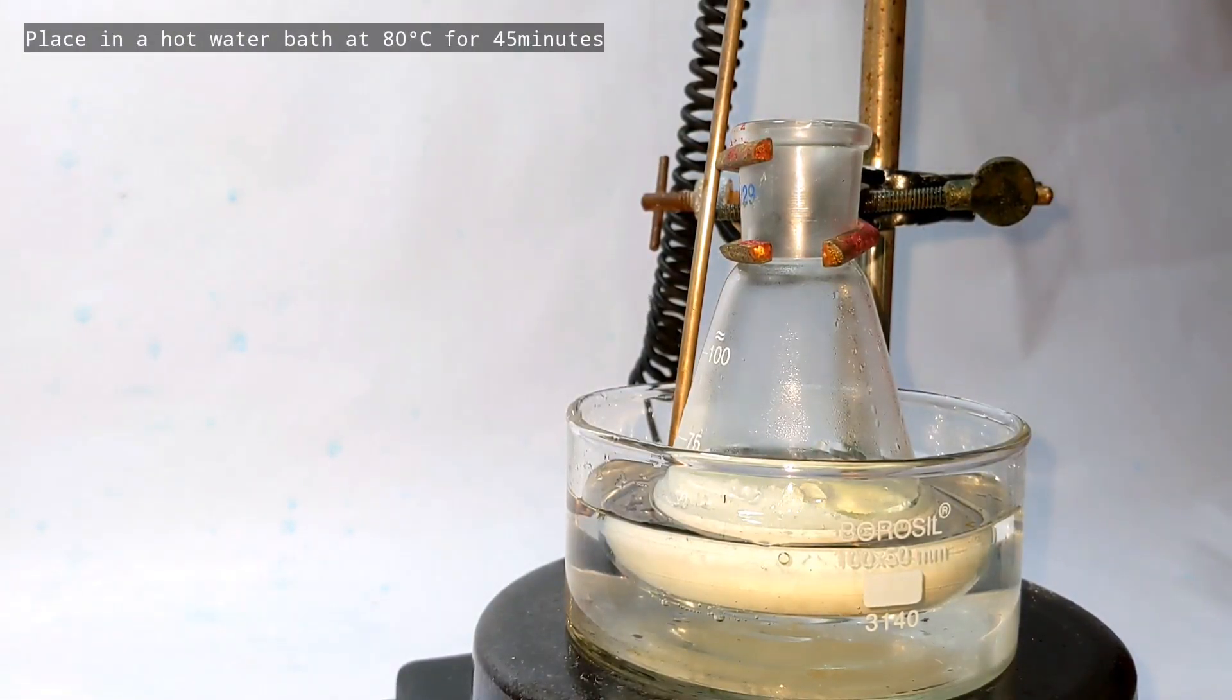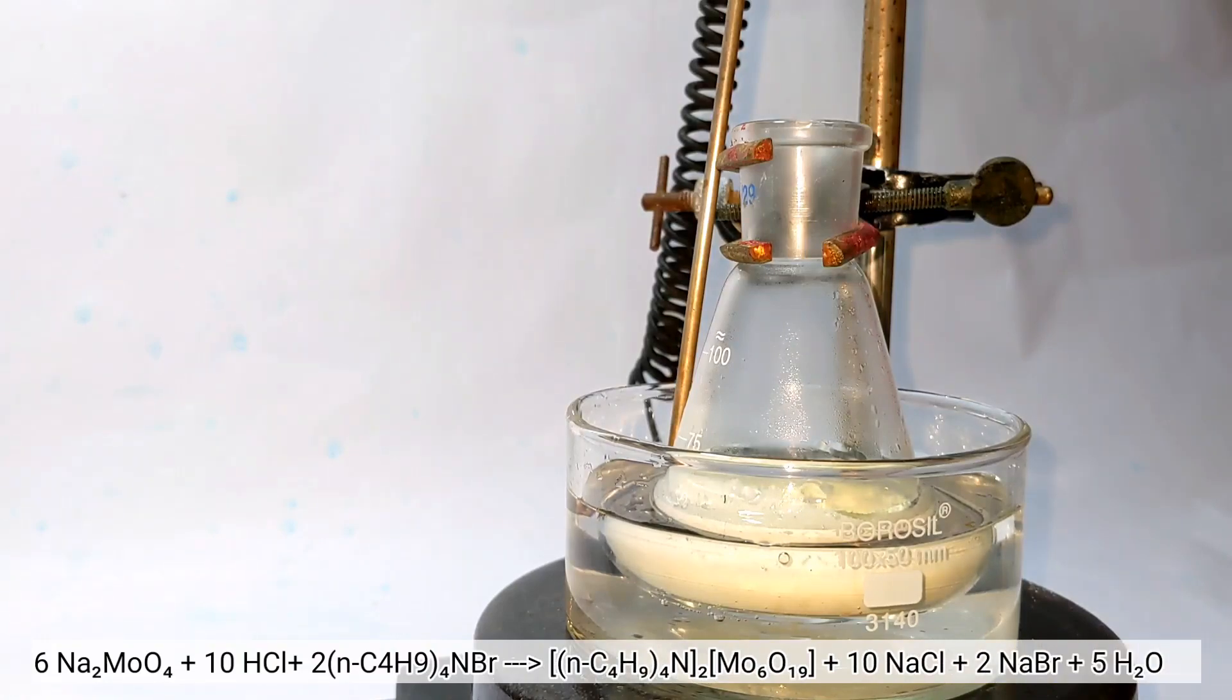Now we place the flask in a water bath at 80 degrees Celsius for about 45 minutes. This is the overall reaction that is taking place. You can clearly see the transition of color from white to yellow.